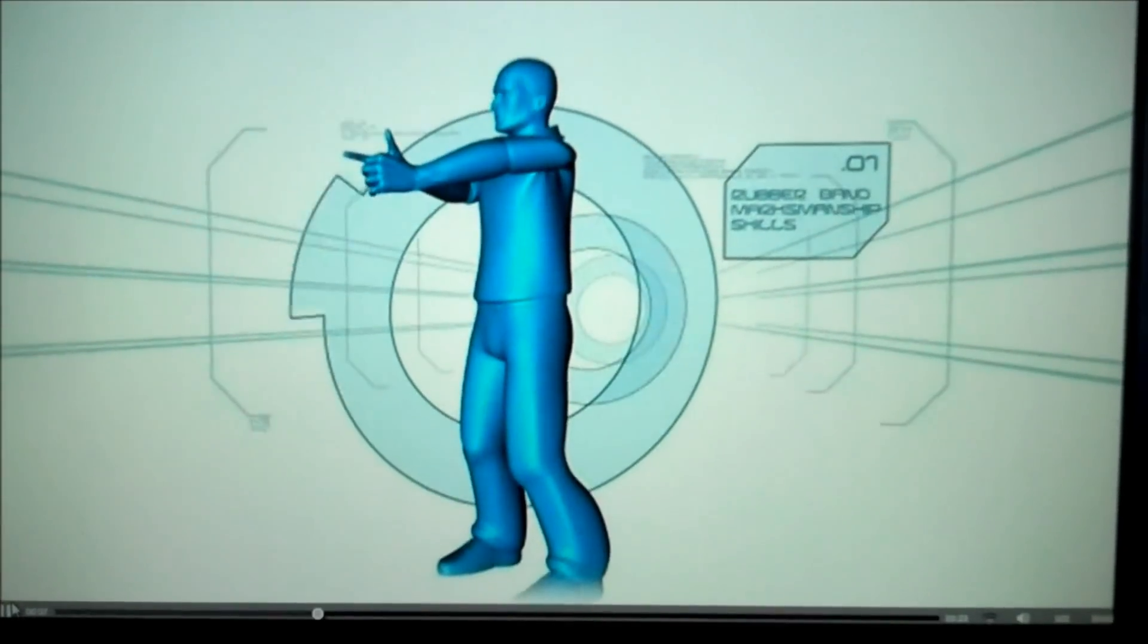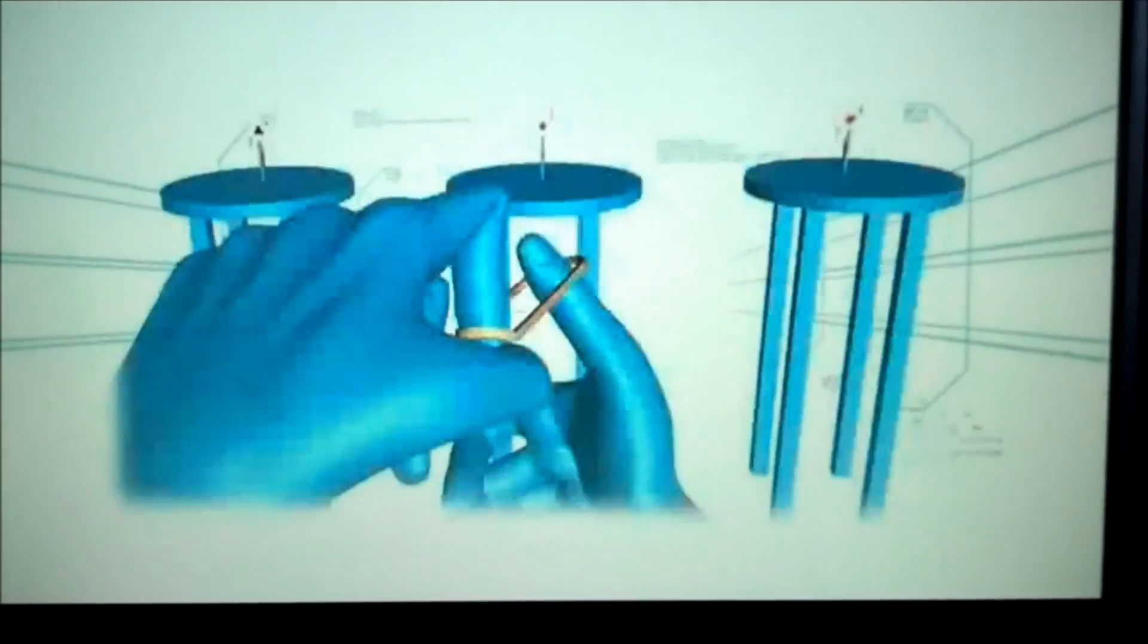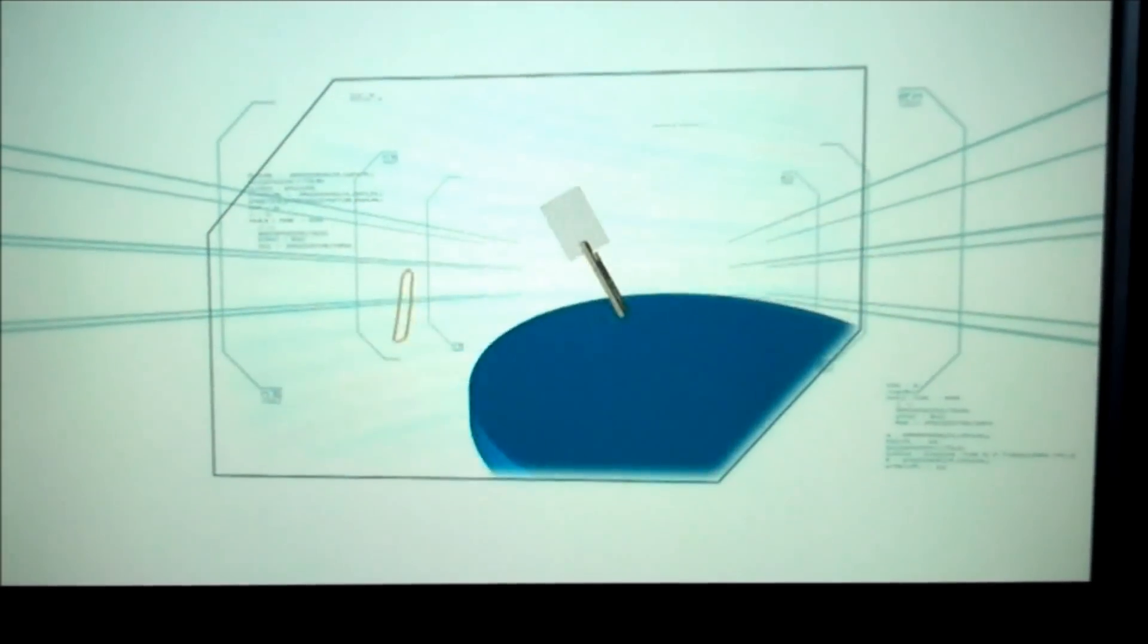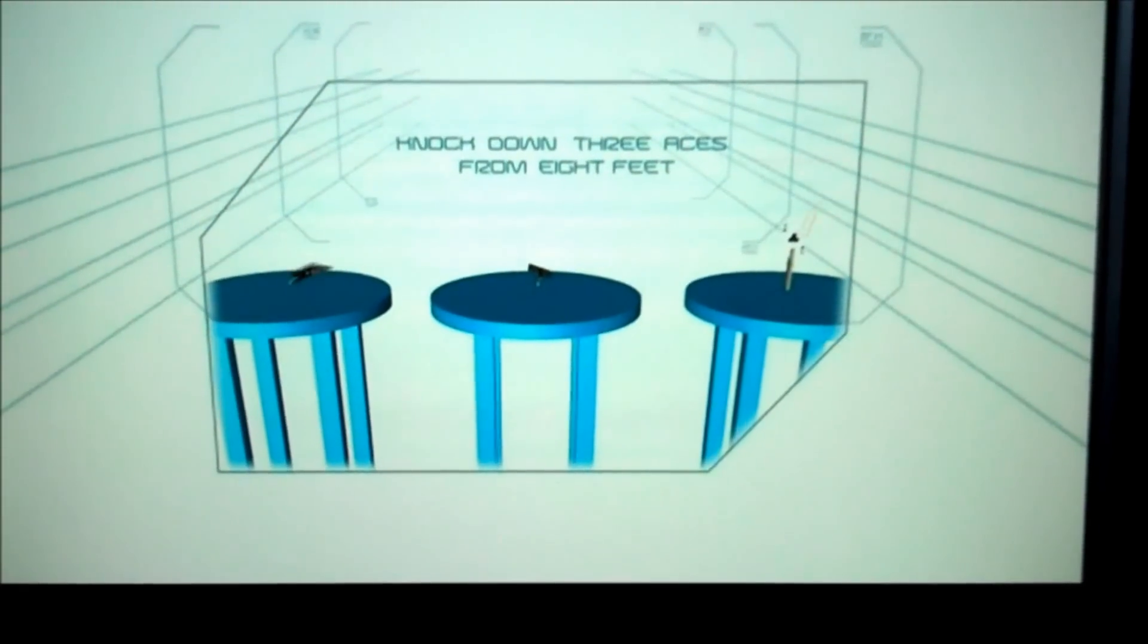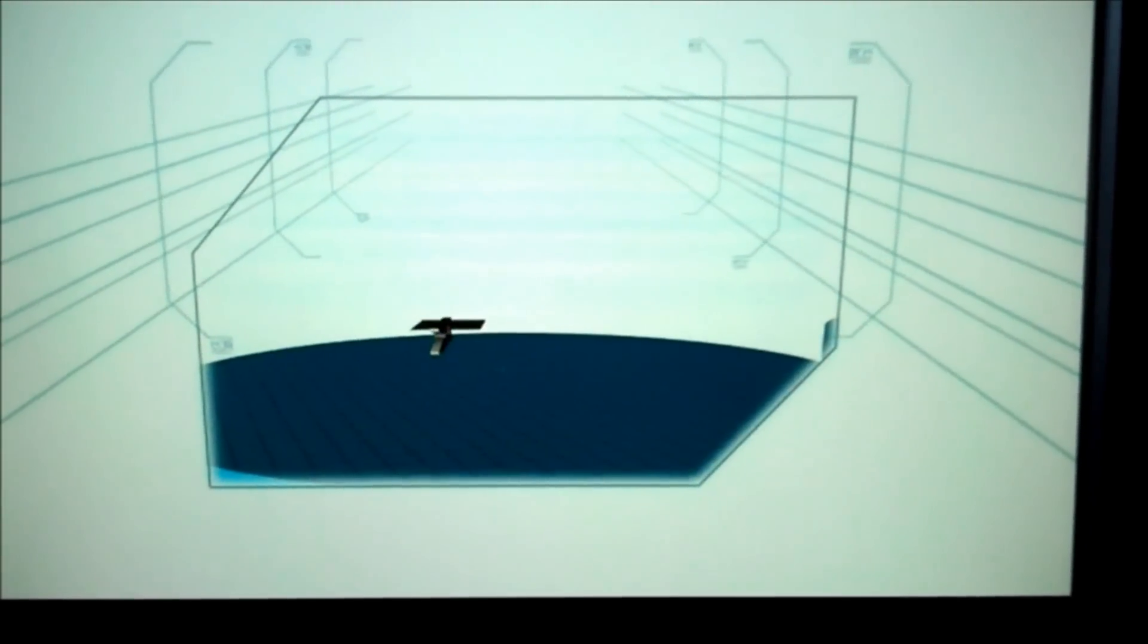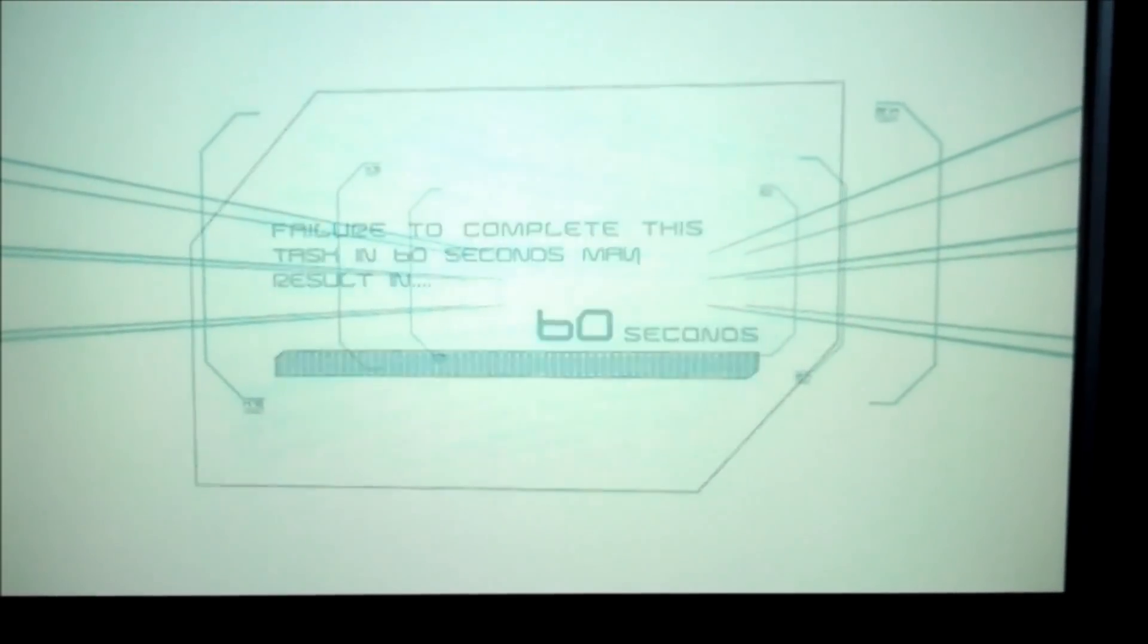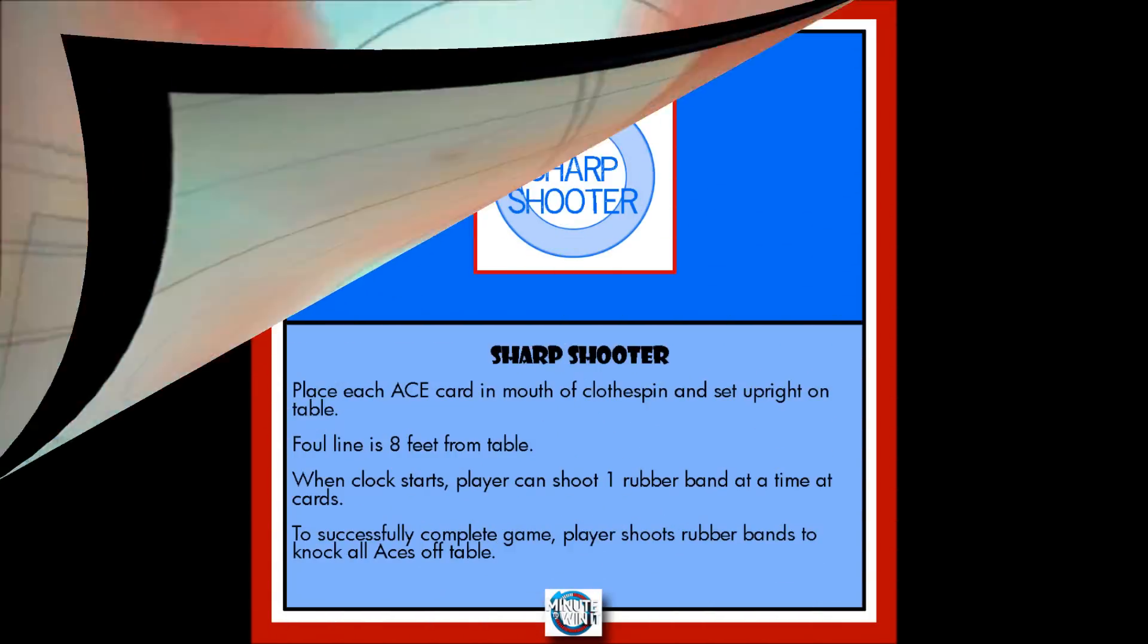In this challenge, the contestant armed with rubber bands must prove their marksmanship skills by hitting playing cards held in place with stands made of clothespins. To succeed, the player must knock down all three aces from a distance of eight feet. Failure to complete this task in 60 seconds may result in elimination.